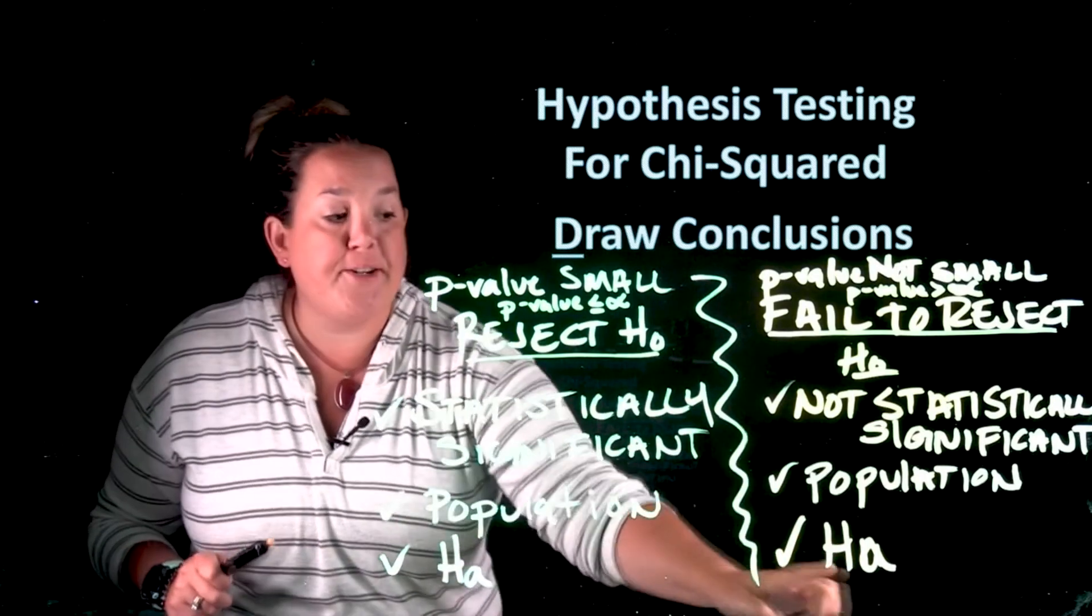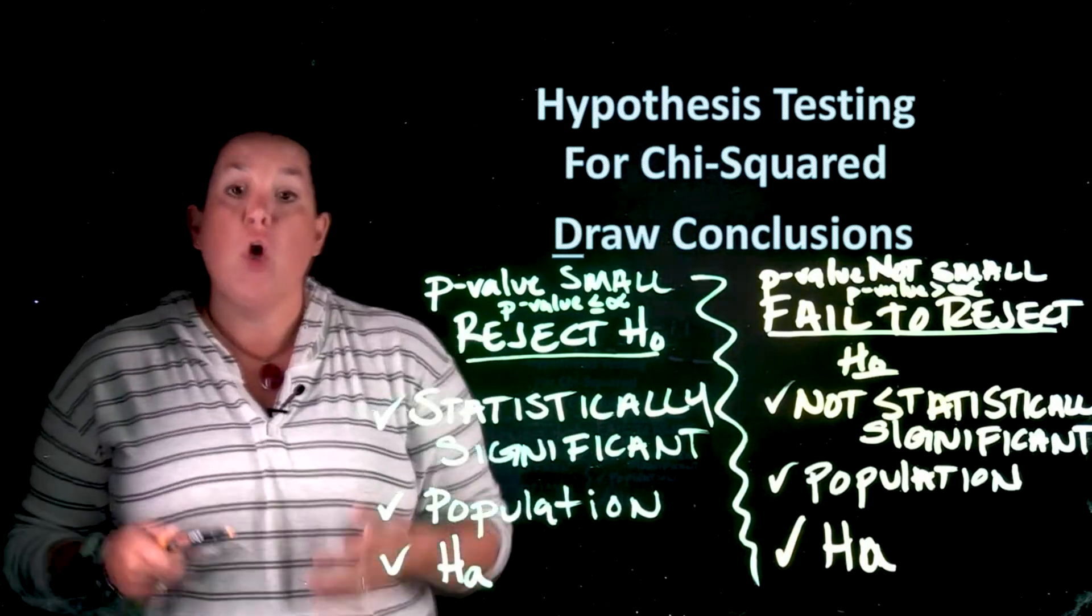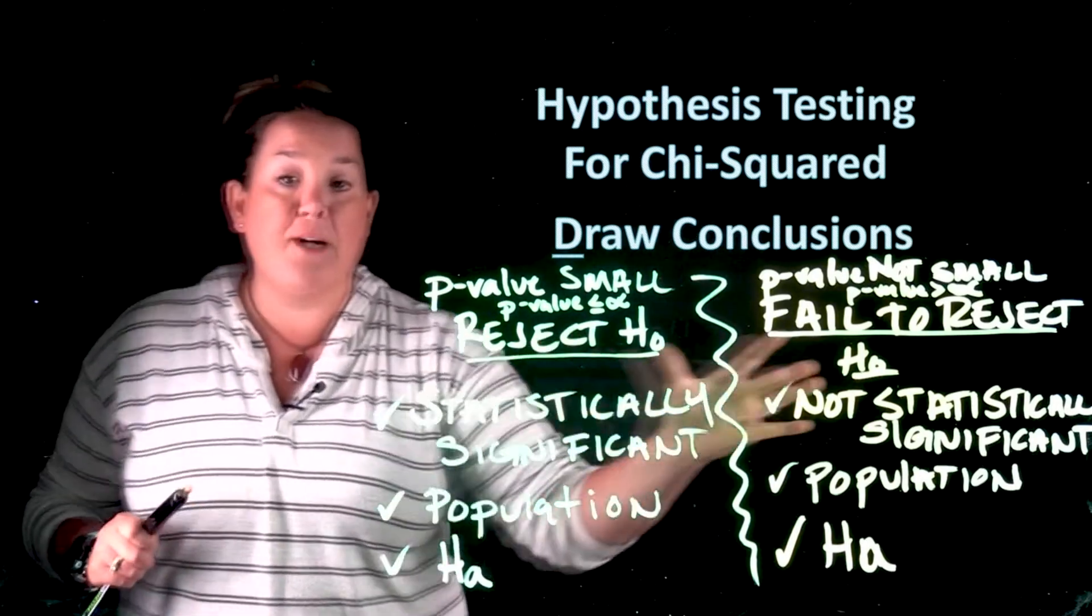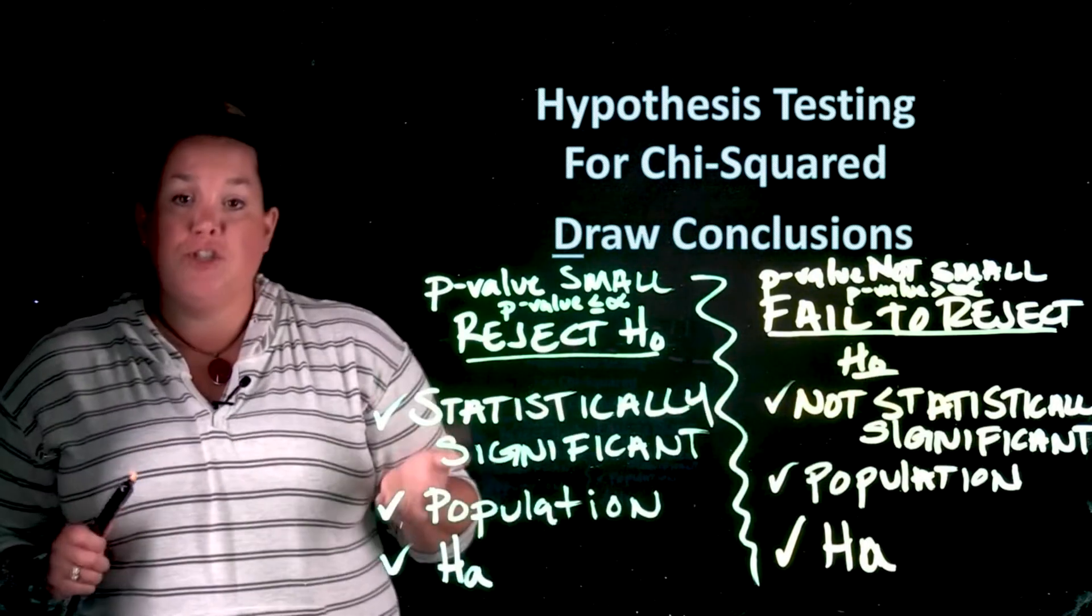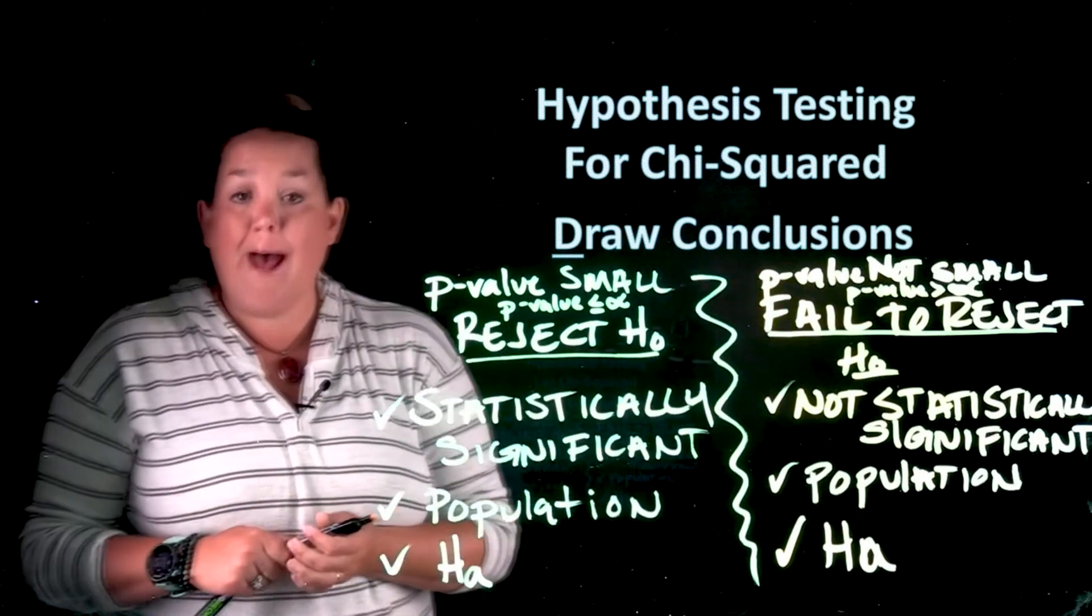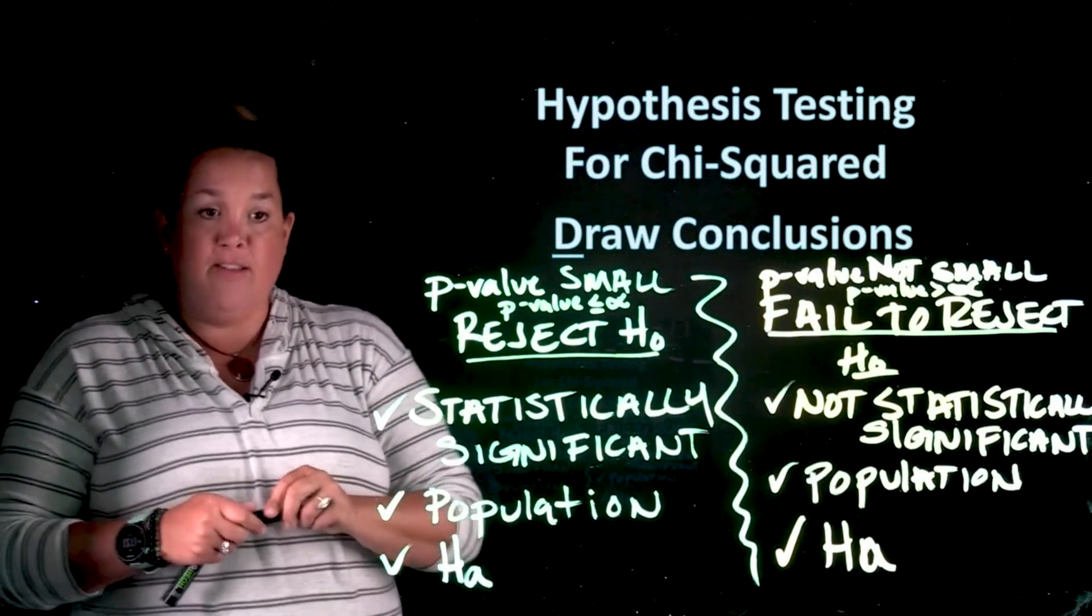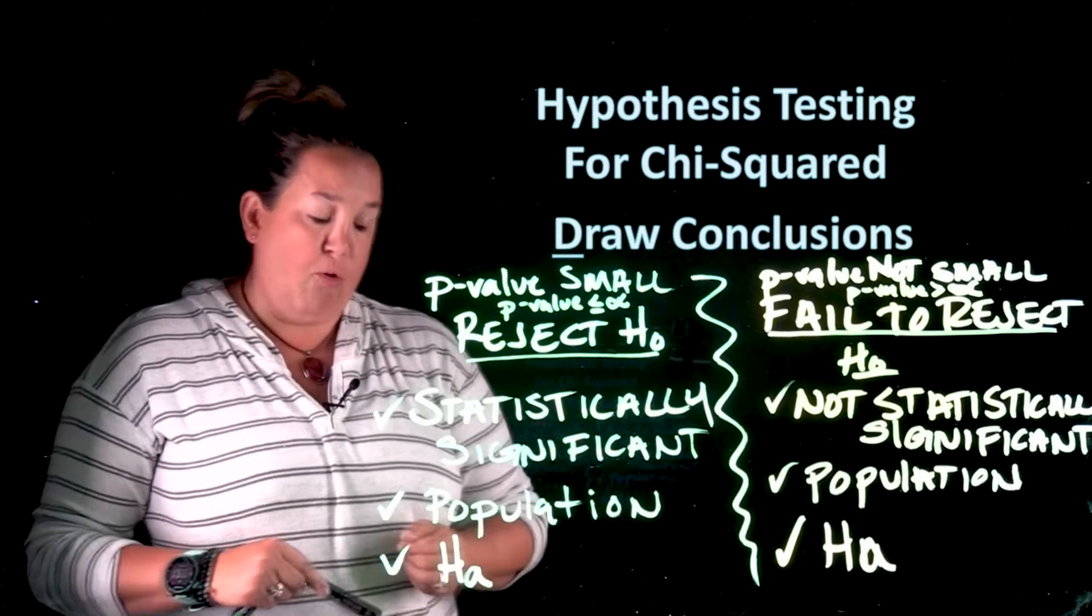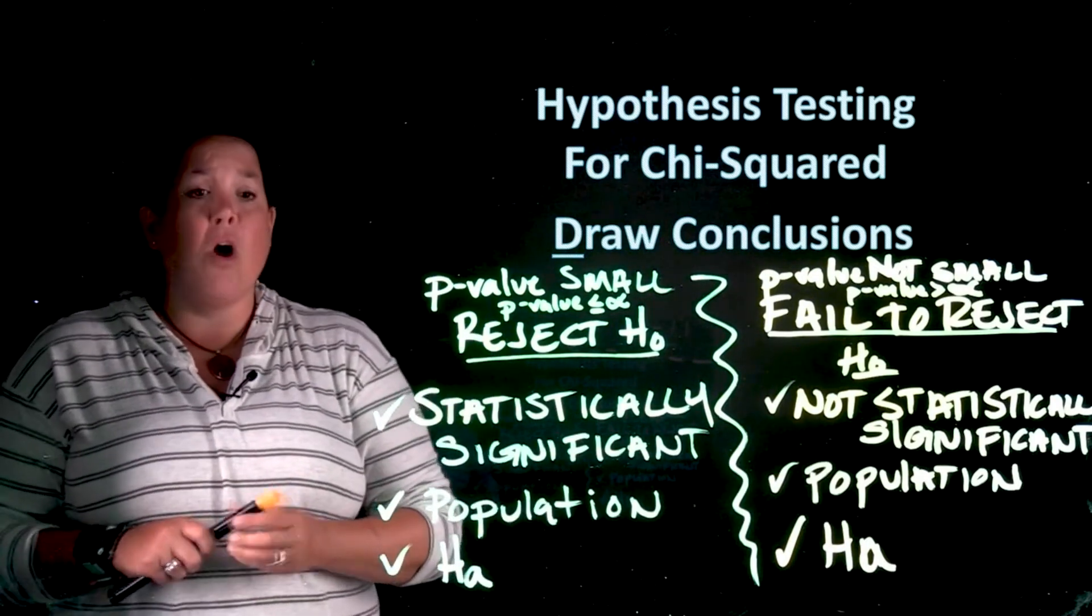But always when you're drawing the conclusion, you're going to be referring to the evidence you have for the alternative. You will simply address how much evidence you have. There's sufficient evidence or statistically significant evidence, or you do not have statistically significant evidence, and it's for the alternative.